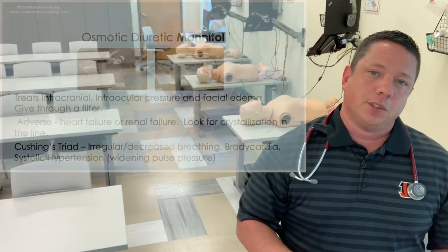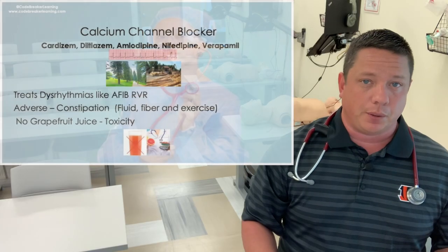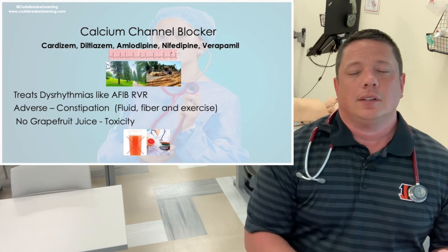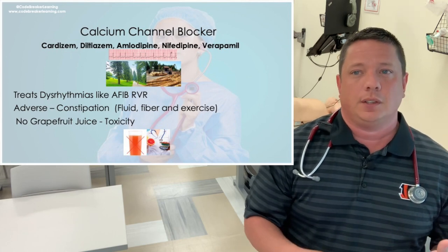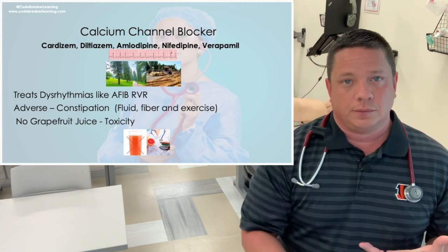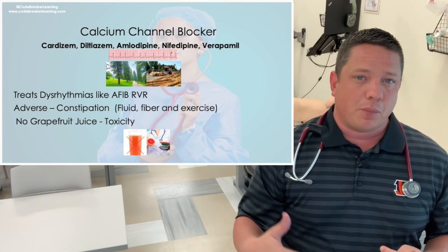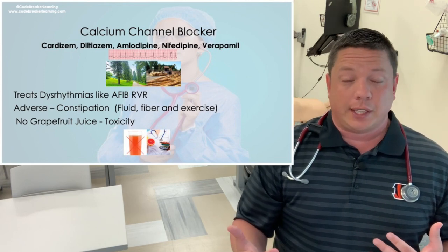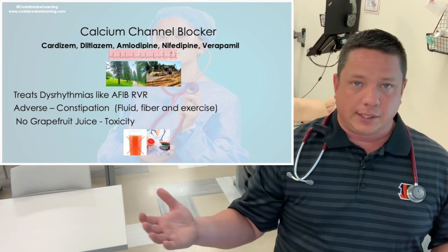The last medication in this sequence is calcium channel blockers. To remember them, use the mnemonic 'take Zim pines to the mill.' Zim is for Cardizem or Diltiazem; Pine is for Amlodipine or Nifedipine; Mill is for Verapamil. These medications can be given as anti-dysrhythmics. In the emergency department, if a patient comes in with new onset AFib with rapid ventricular rate — essentially a fast heart rate with AFib — we'll start a calcium channel blocker like a Diltiazem or Cardizem drip to slow the heart rate and get them out of that dysrhythmia.